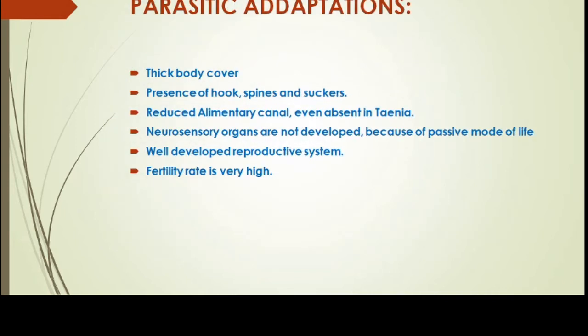Now let's discuss parasitic adaptations — the special characteristics that make these organisms successful parasites. They have a thick body covering: their external body surface is comparatively thick with a cuticle layer, which prevents the host's defense mechanism from rupturing them. For attachment to the host, hooks, spines, and suckers are present. The alimentary canal is either poorly developed or completely absent in parasites — for example, Taenia has no digestive tract at all.